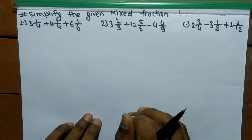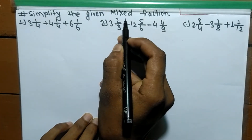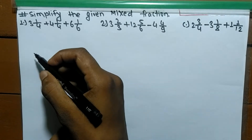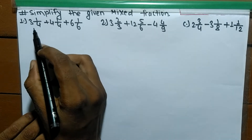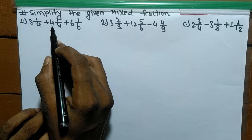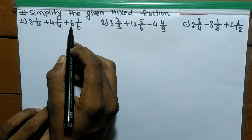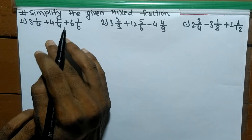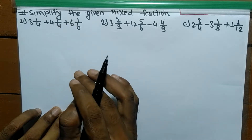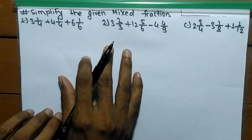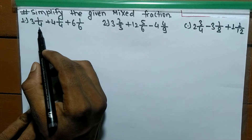Today in this video we are going to simplify the given mixed fractions. In the first problem we have 3 whole 1 by 4 plus 4 whole 1 by 4 plus 6 whole 1 by 6, and we have to simplify these mixed fractions. For that, first of all we have to convert these mixed fractions into improper fractions.